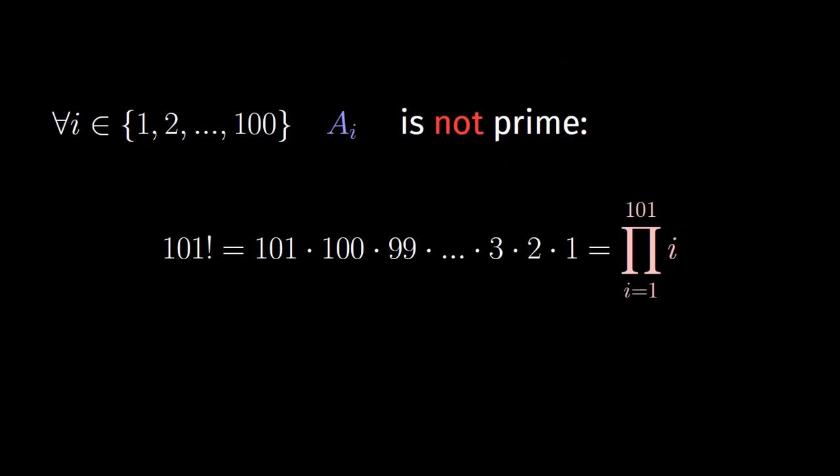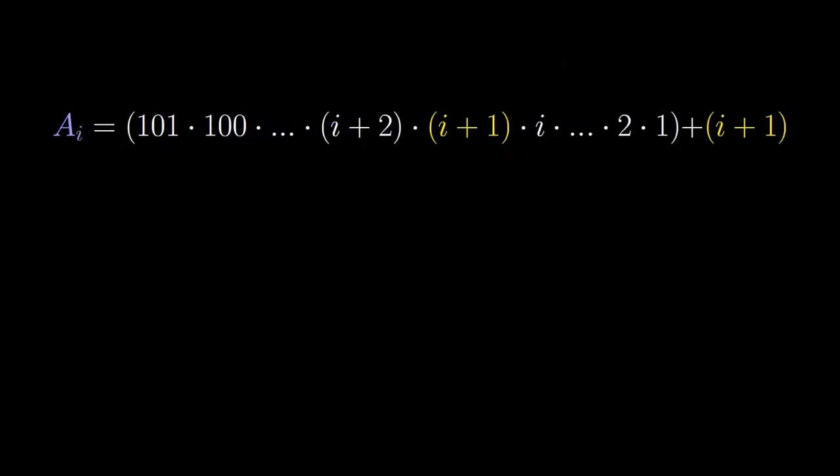Then each ai is the previous factorial plus i plus 1. We only need to notice that i plus 1 appears in the factorial. That means that it divides it. And then it divides the totality of the number ai. i plus 1 is at least 2 and certainly smaller than ai. That means that it is a proper factor of ai. Then ai is not prime.